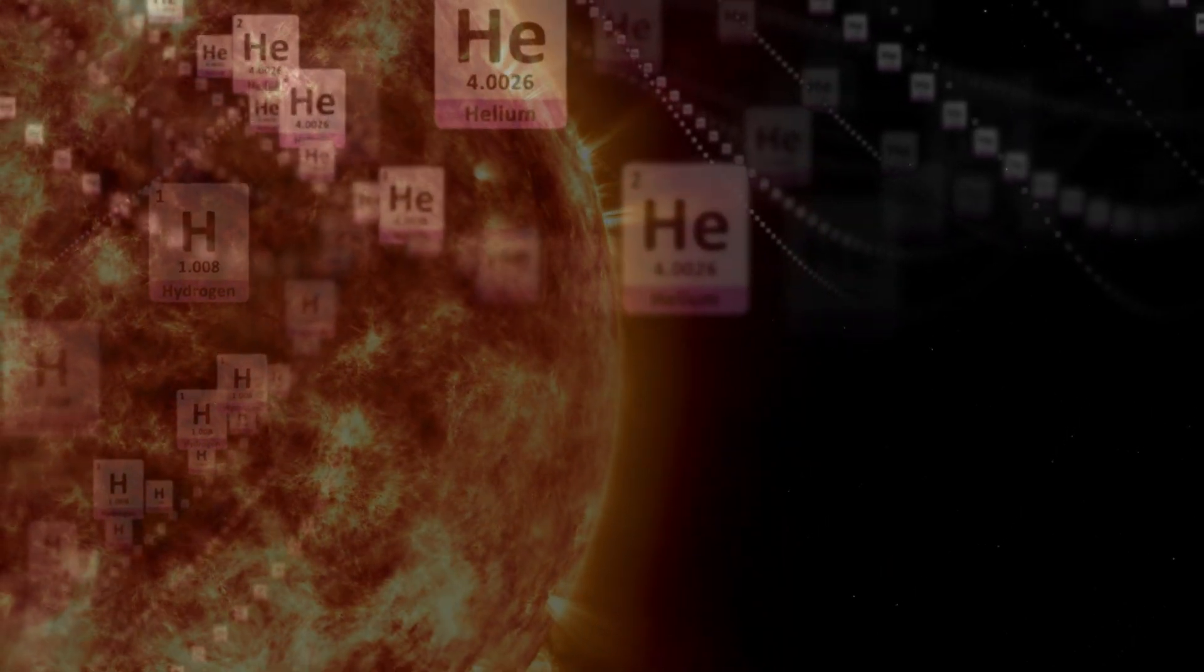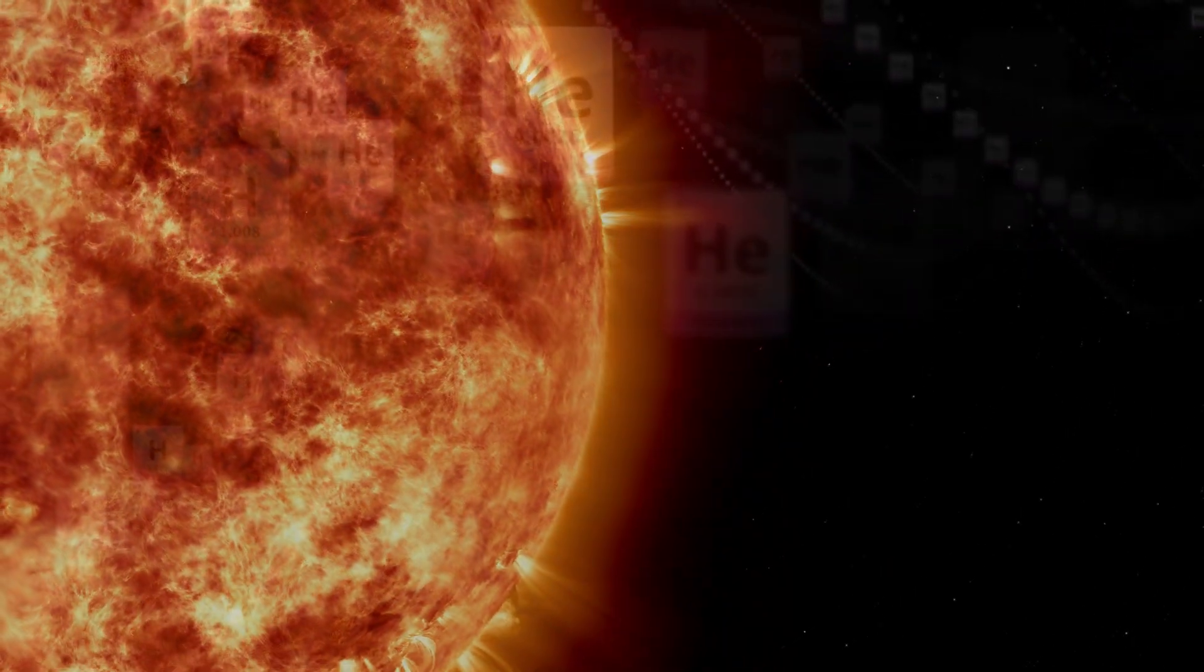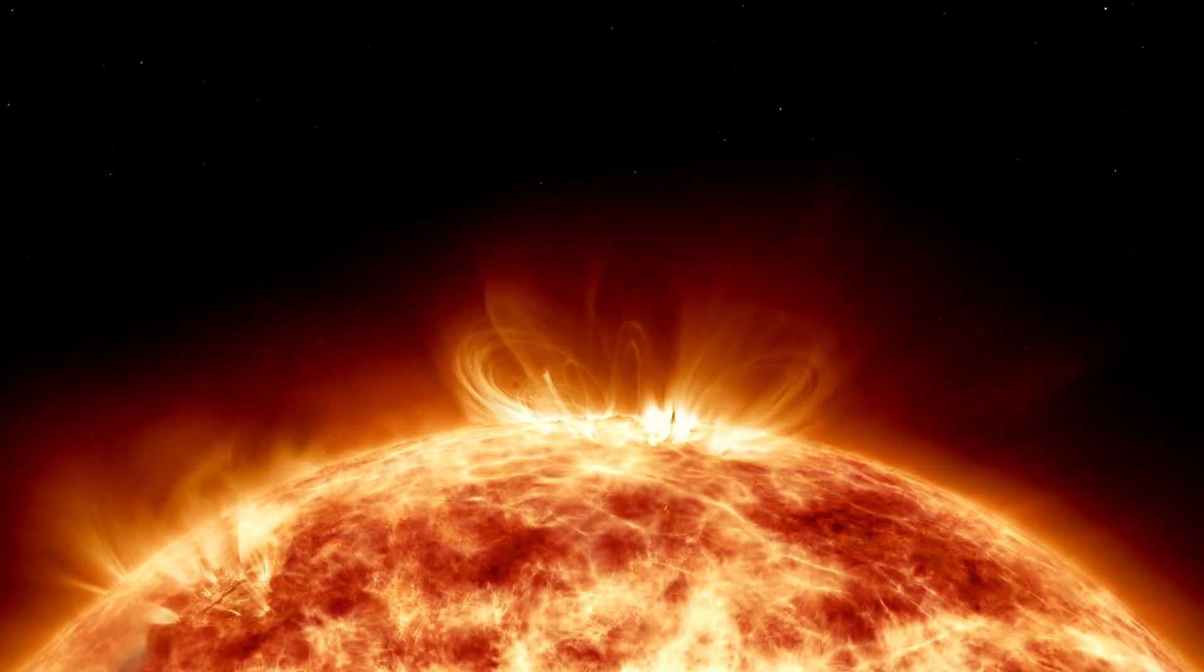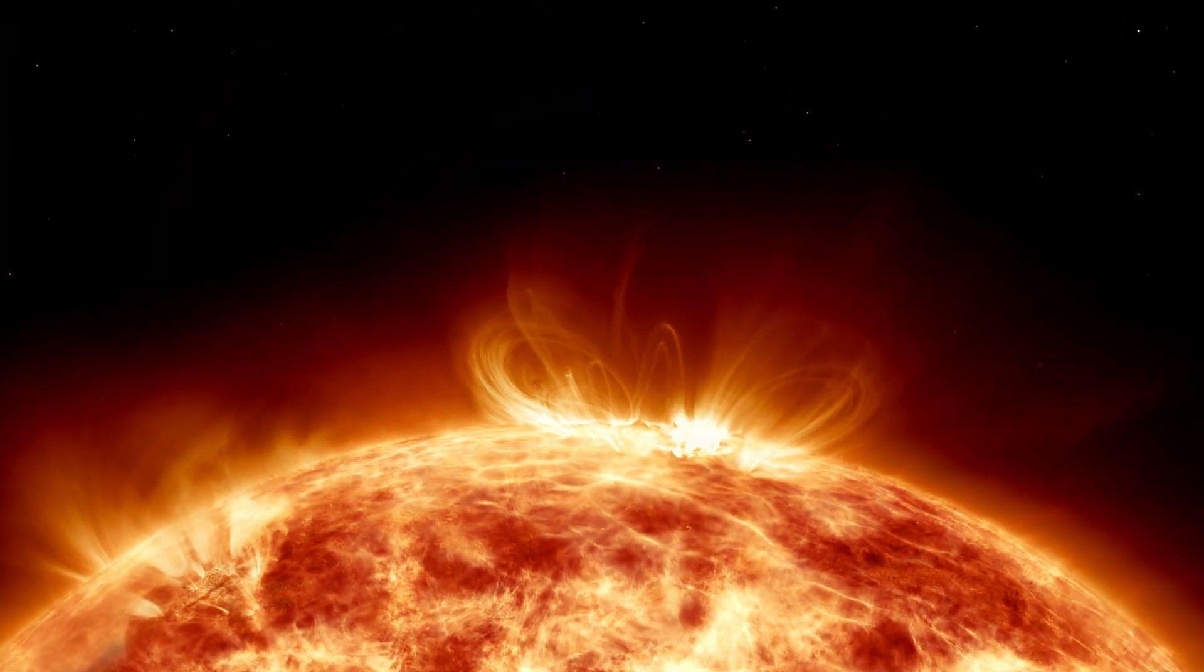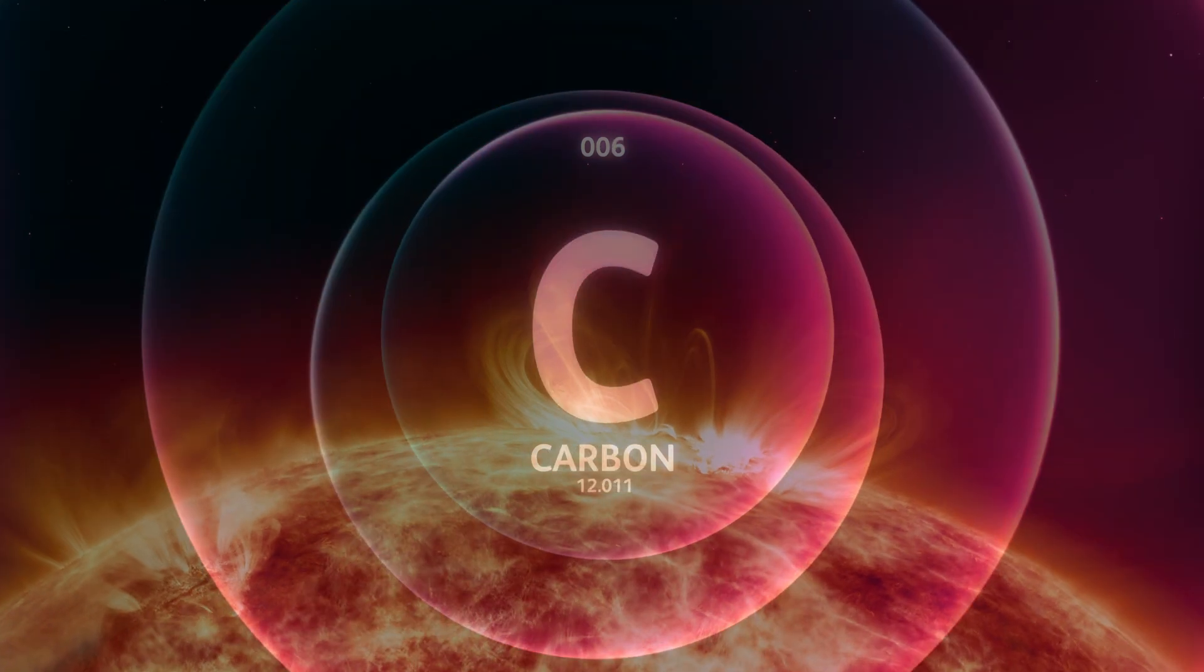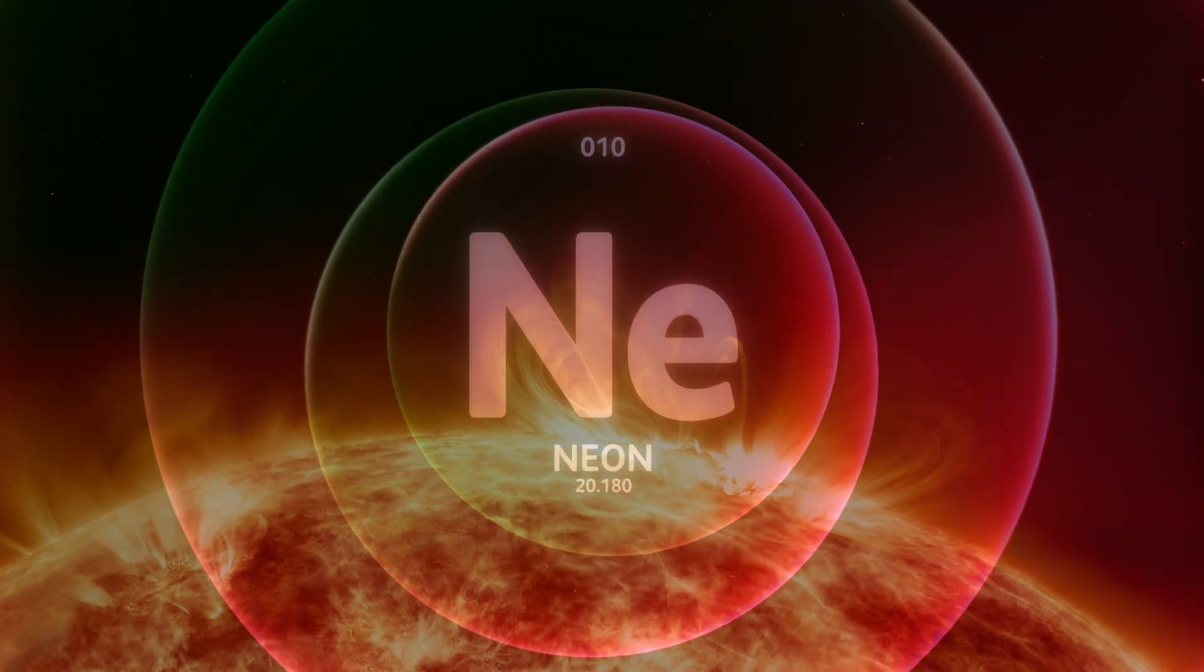Hydrogen makes up about three-fourths of the Sun's mass, while helium makes up most of the rest. The Sun also has small amounts of other heavier elements like oxygen, carbon, neon, and iron.